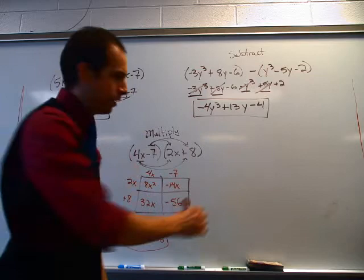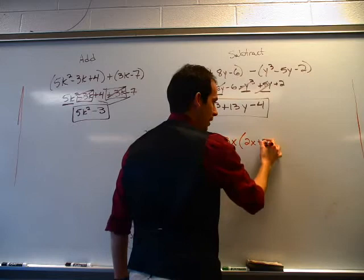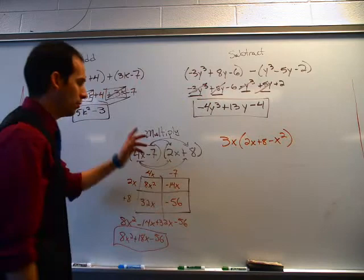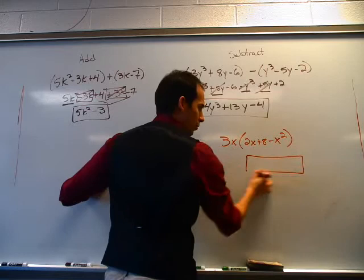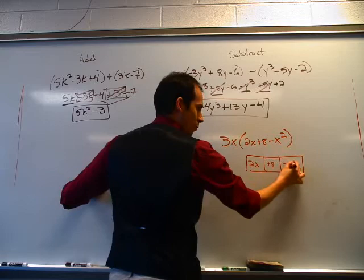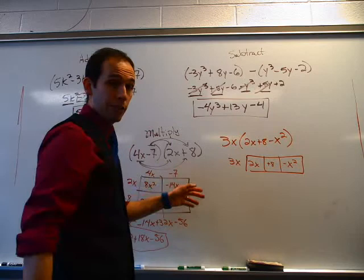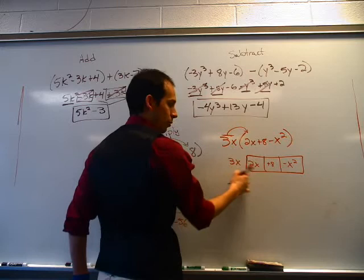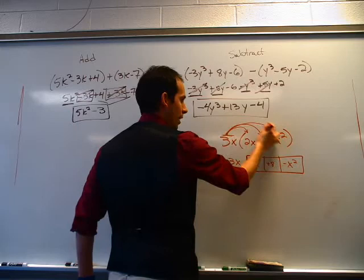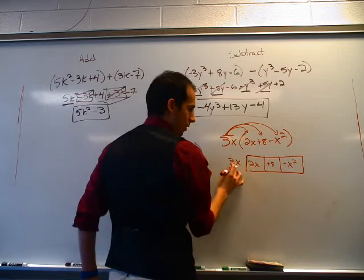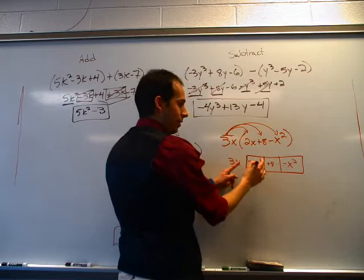If you look at number 12, there's a problem that looks something like this: 3x times 2x plus 8 minus x squared. You may use the box method as well by putting a box where you separate these three terms: 2x, 8, and negative x squared, and multiply times 3x. Or you can use the distributive property. So you get 3x times 2x, 3x times 8, and 3x times negative x squared. 3x times 2x: 3 times 2 is 6, x times x is x squared — this is x to the first power times x to the first power, so you add exponents and get x squared, giving 6x squared. 3x times 8: 3 times 8 is 24x.